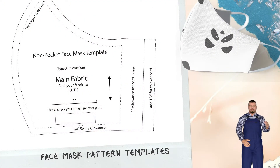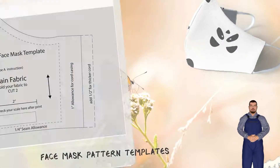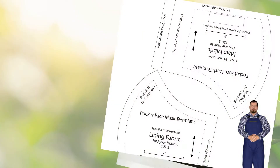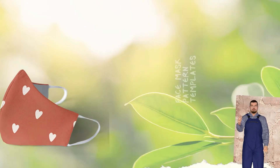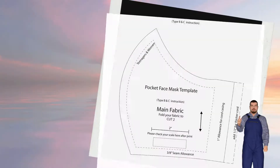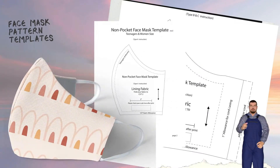Type A: normal face mask. Type B: face mask with a pocket for filter insert or as a surgical mask cover. Type C: add on a removable nose wire to Type A and Type B.